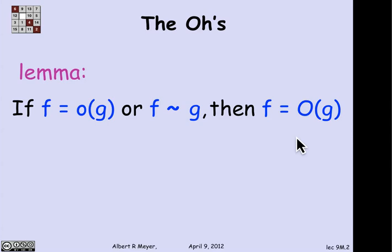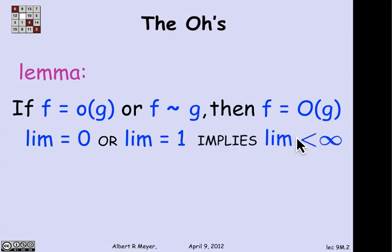But we can in fact be entirely precise just using the definitions, because f equals o of g means the limit of f over g is 0, and f is asymptotically equal to g means that the limit of f over g is 1. And the definition of f equals big O of g is that the limit is finite. And clearly, if it's 0 or 1, then it's finite.